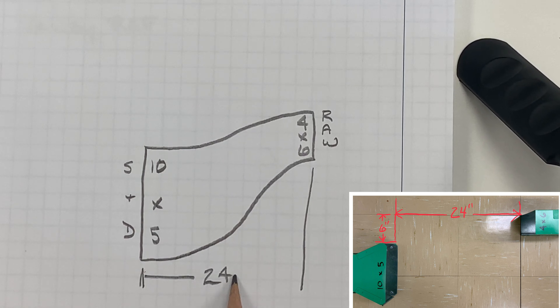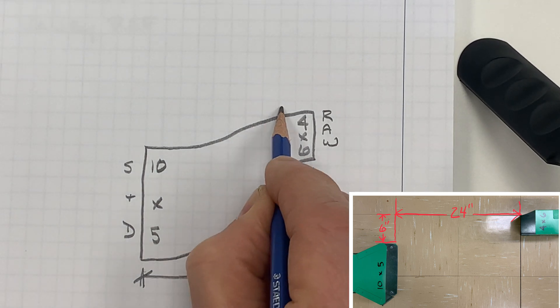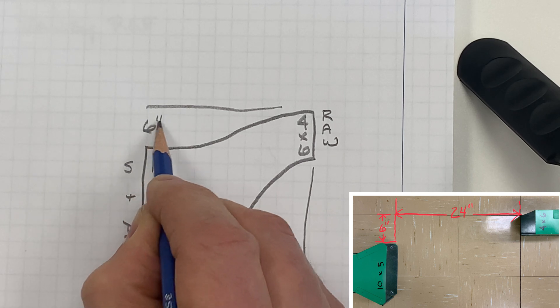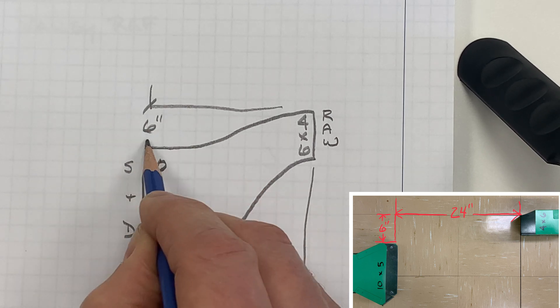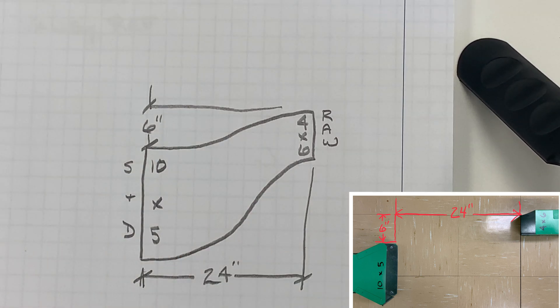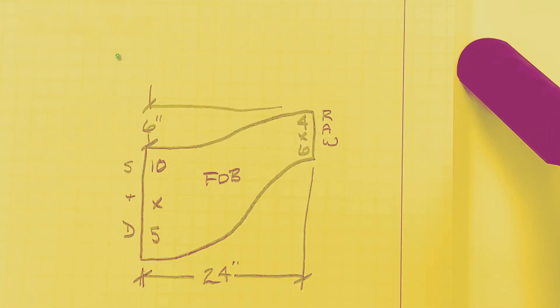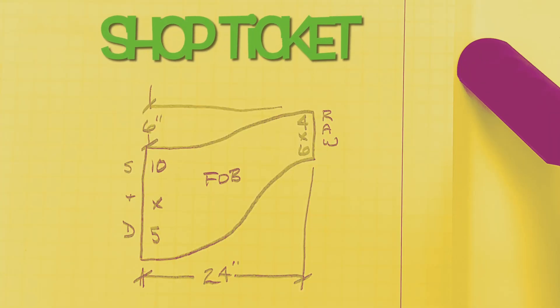And in this case you'll see that it's six inches. And because it's flat on the bottom, you write down FOB. This is your shop ticket ready to be sent to the shop and arrive to the job site.